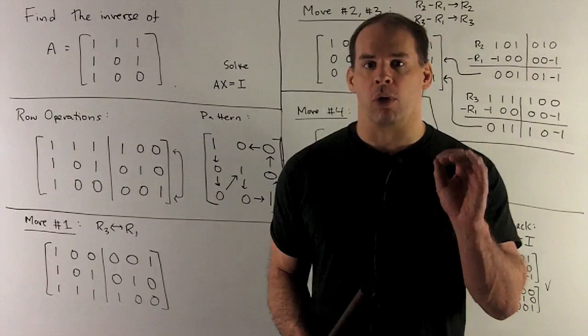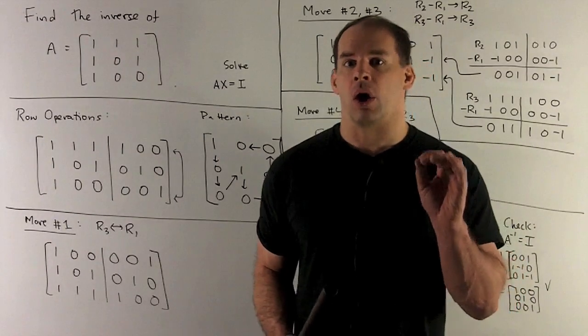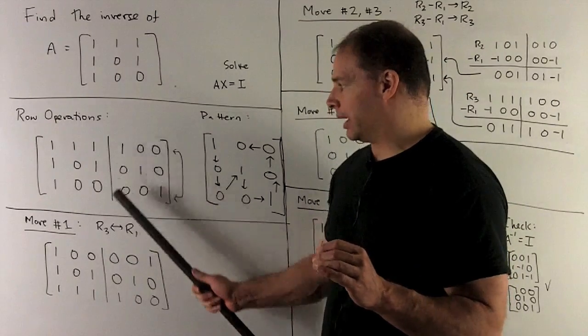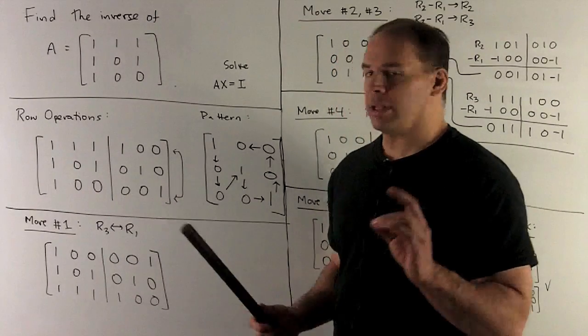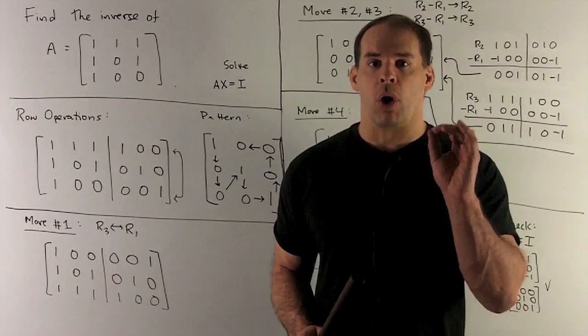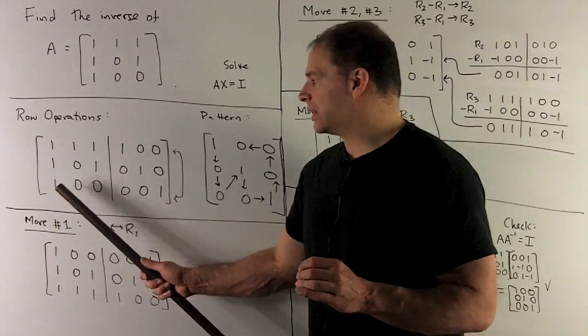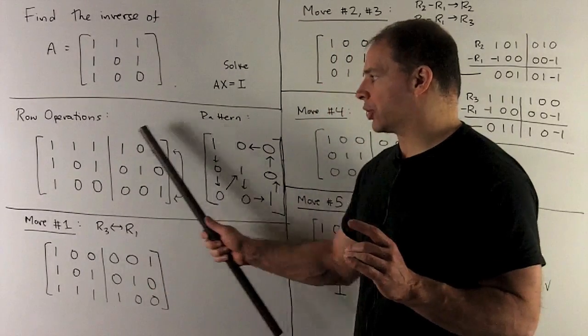So the way we do our row reduction, I take our original matrix and augment with the entire identity matrix. Now we want to perform row operations. Our target is to turn the matrix on the left into the identity matrix.